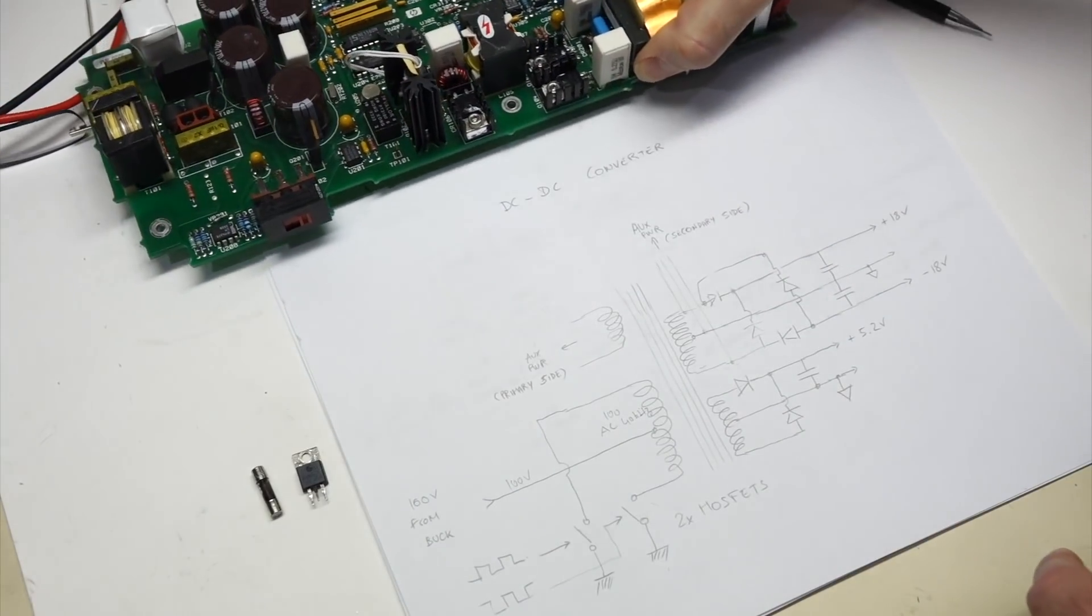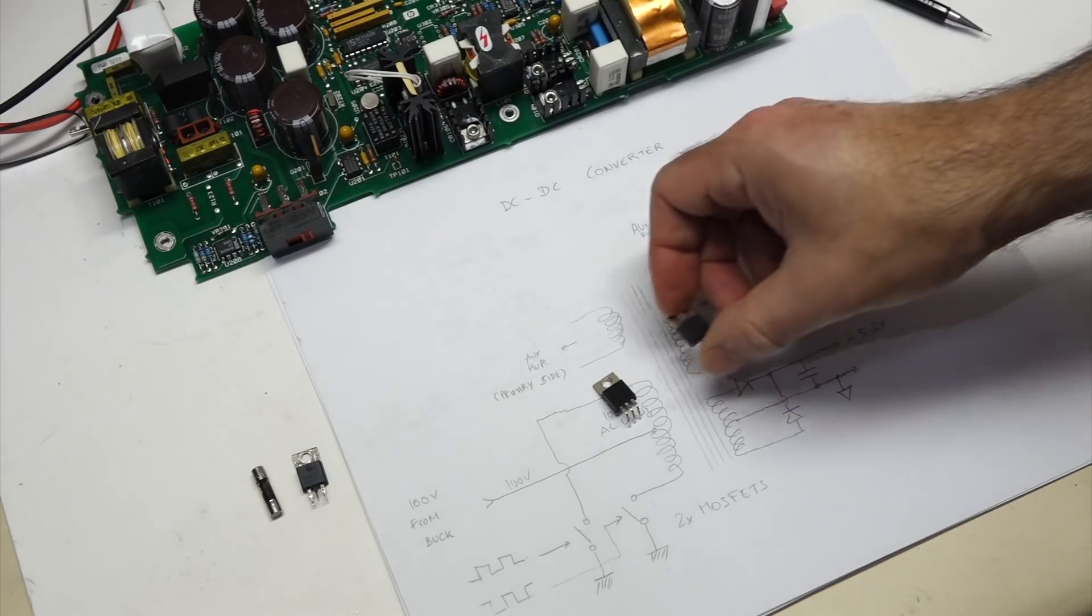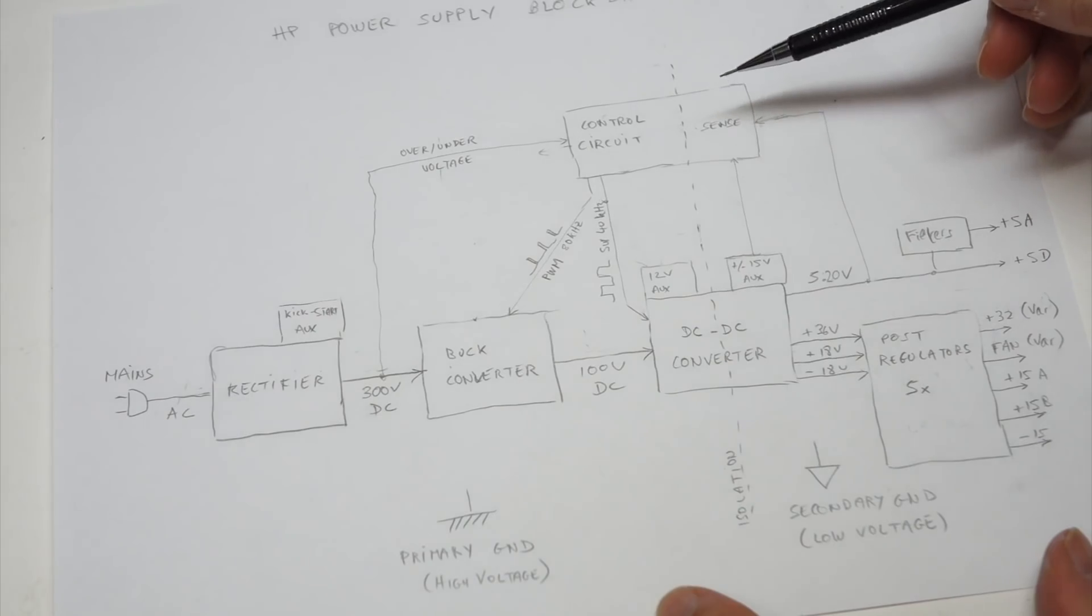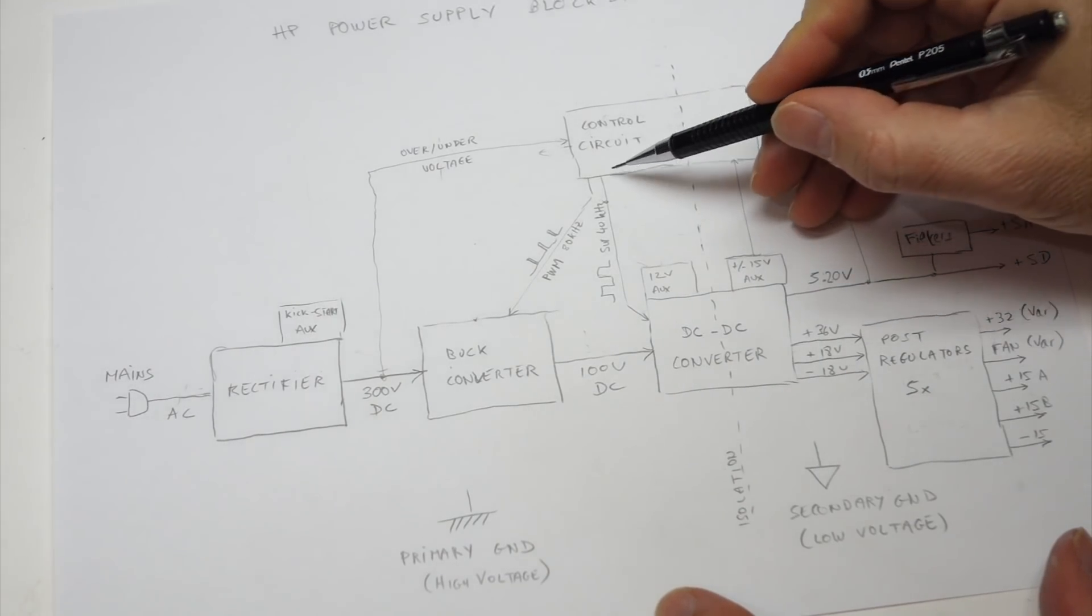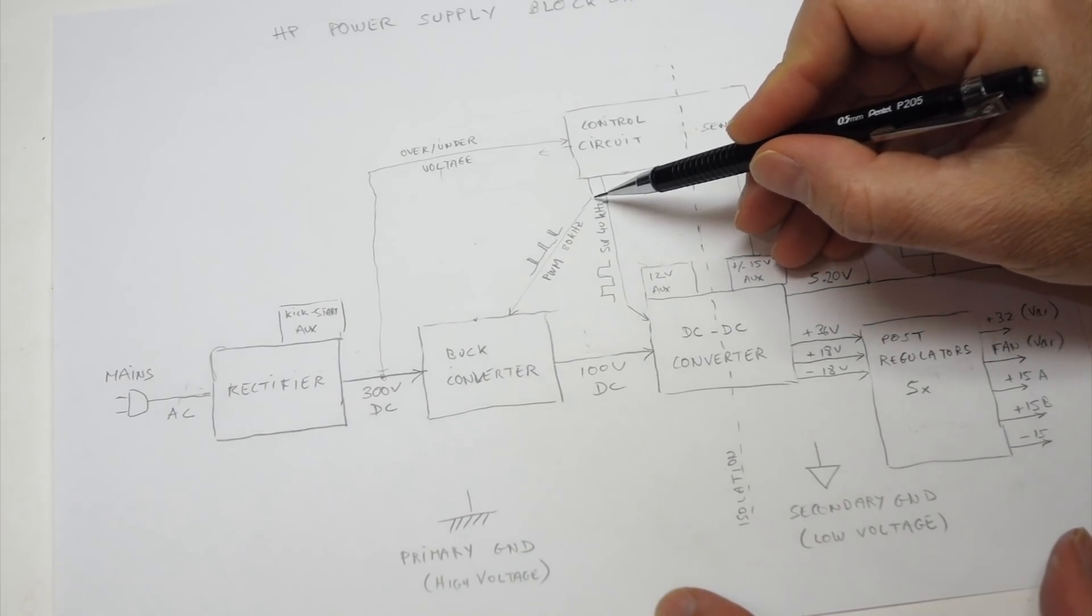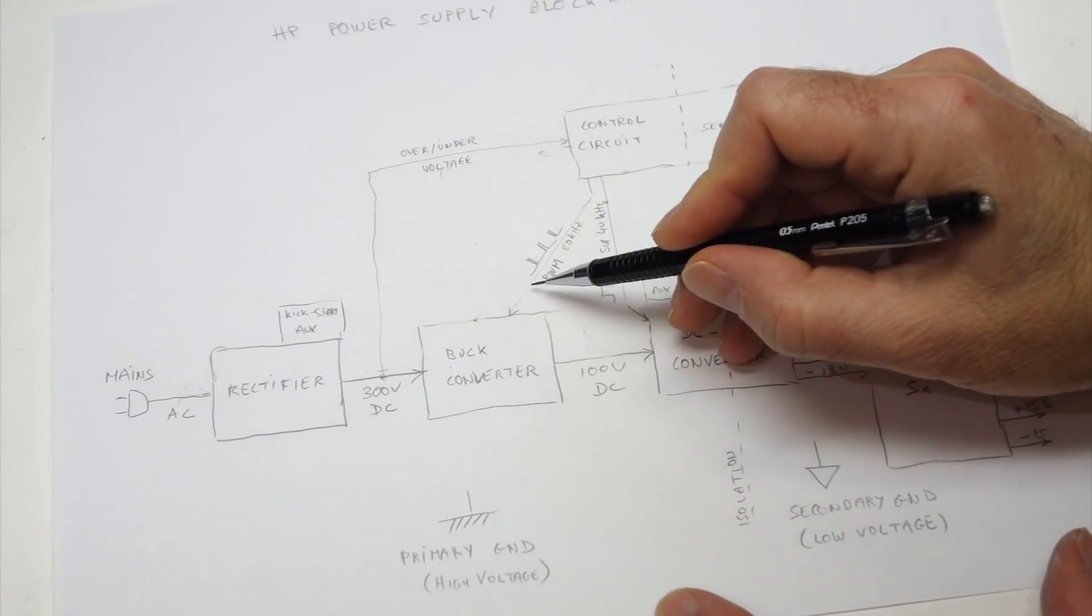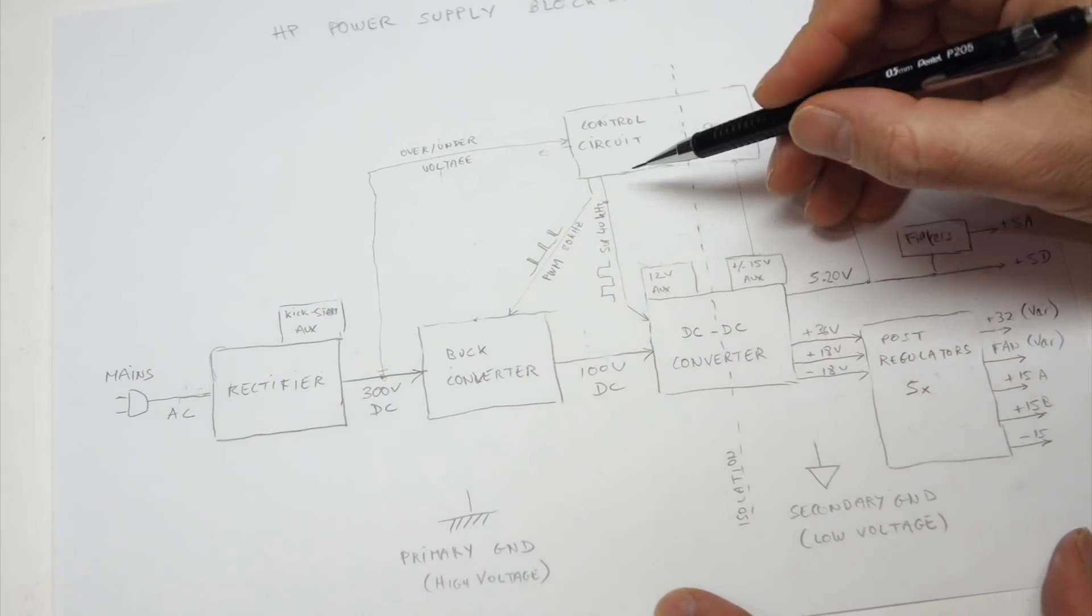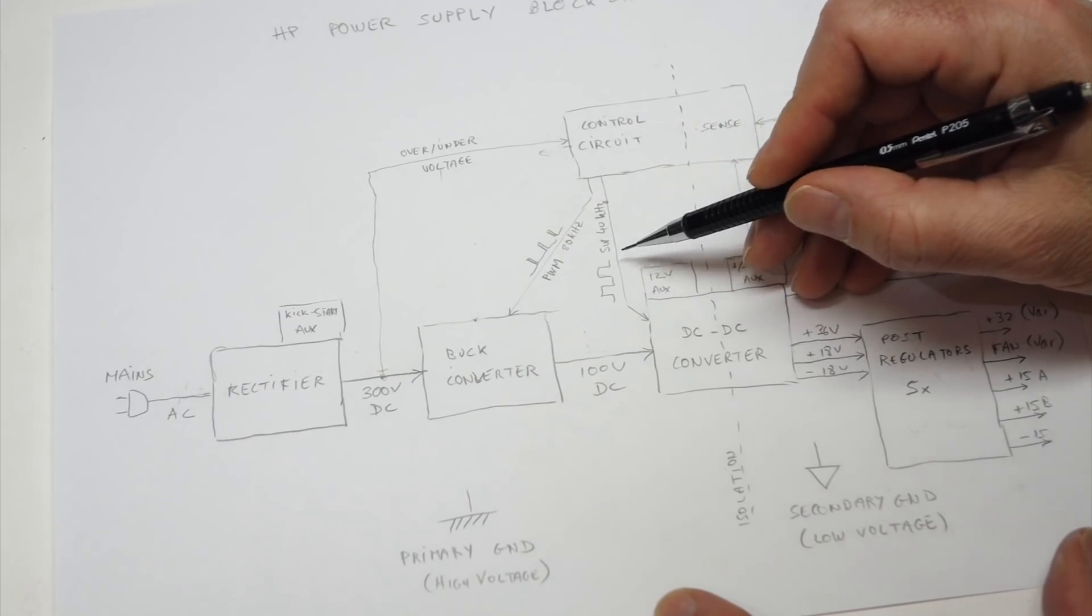So far we know that the supply blows its MOSFETs, so it's not safe to put them back until we check that the control circuitry is working properly. Which brings us to the control circuitry, which we need to check first. There should be something that produces pulses for all of our MOSFETs. On the buck converter, we should have PWM pulses at 80 kHz. And on the DC to DC converter, we should have square wave at 40 kHz.